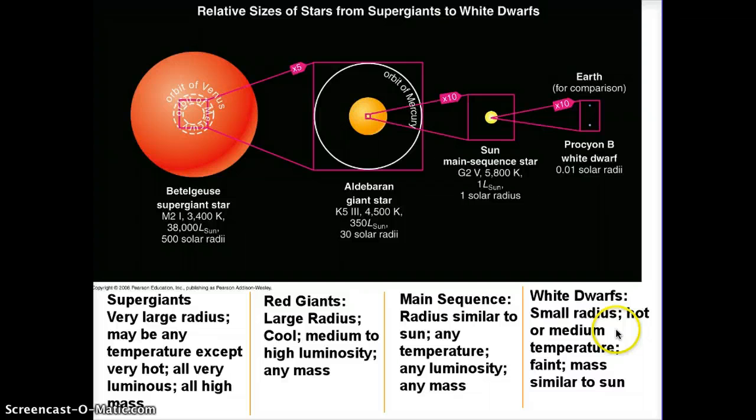Main sequence stars have a radius similar to the sun. Some are bigger, some are smaller, but they're all within about 10 times bigger to 10 times smaller, so pretty close to the size of the sun. They covered the entire temperature scale. Every spectral class was on there. They went from the left to the right. They went from the top to the bottom, so they can have any luminosity, and they can have any mass. So main sequence is a very broad category.